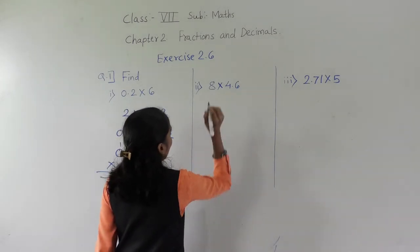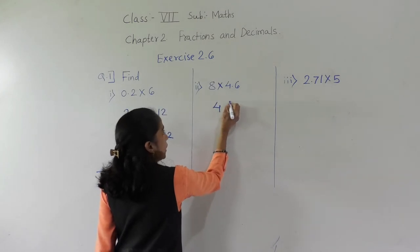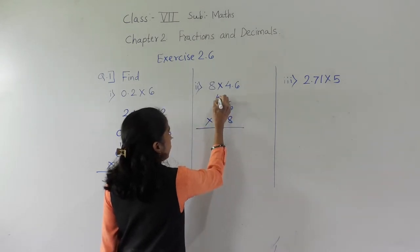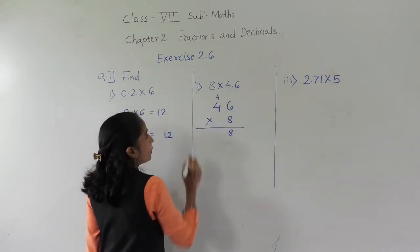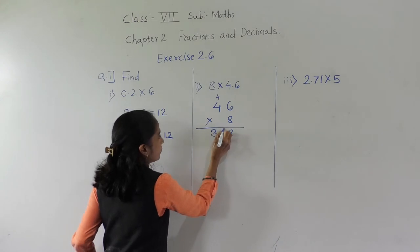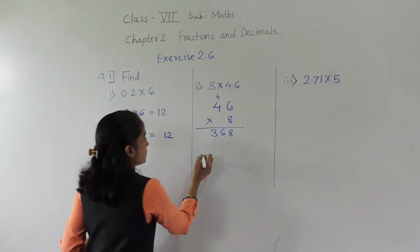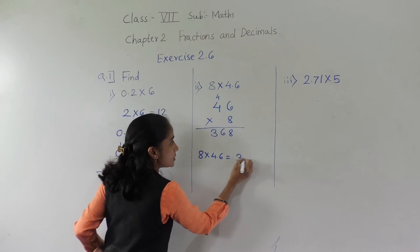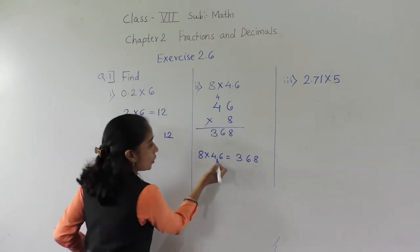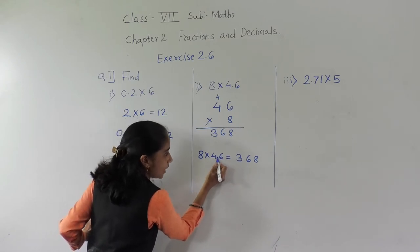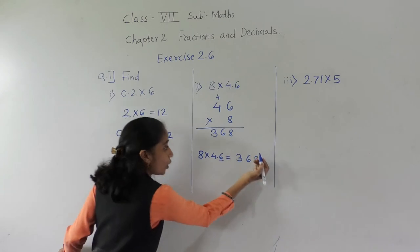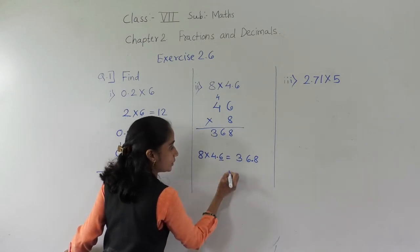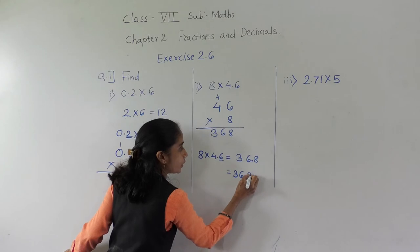Next, 8 multiplied by 4.6. Without the decimal point first we will write 46 multiplied by 8. 8 sixes are 48, 8 fours are 32, 32 plus 4 is 36 — so the answer without decimal is 368. For 4.6, after the decimal point there is only 1 digit, so from the right-hand side count 1 digit and give the decimal point. Our answer is 36.8.